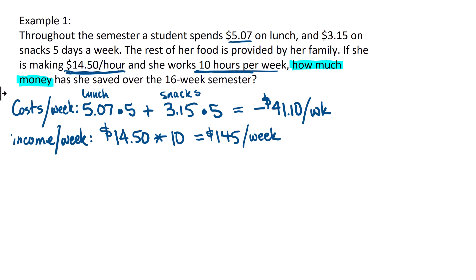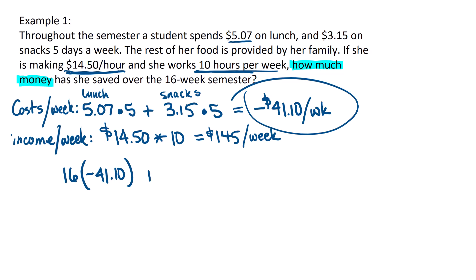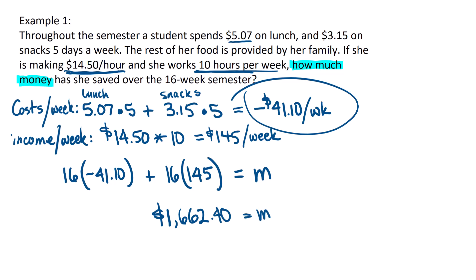Now if we want to find out how much money she makes over a semester — a sixteen-week period — we take the costs and multiply by sixteen weeks: sixteen times negative forty-one ten, then add sixteen weeks times the amount she makes in a week, positive one hundred forty-five. This equals the amount of money she makes over the course of a semester. The answer is one thousand six hundred sixty-two dollars and forty cents, rounded to two decimal places.